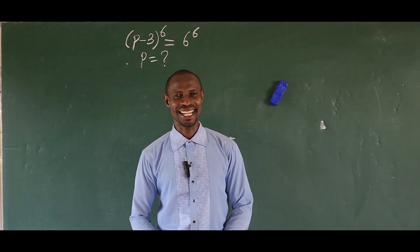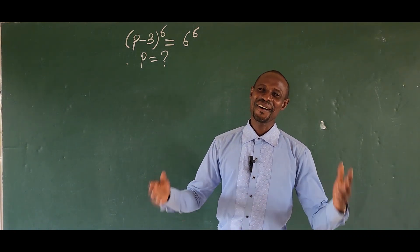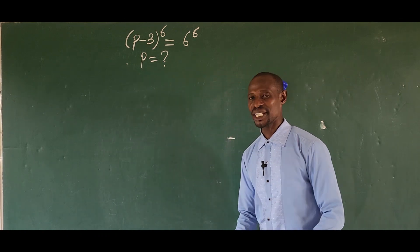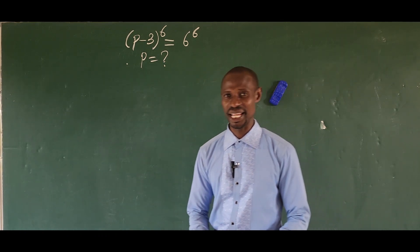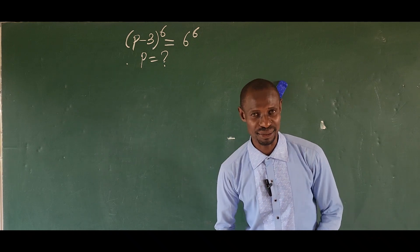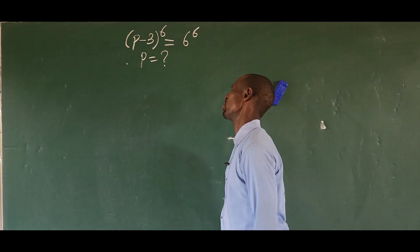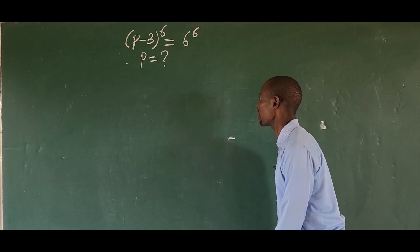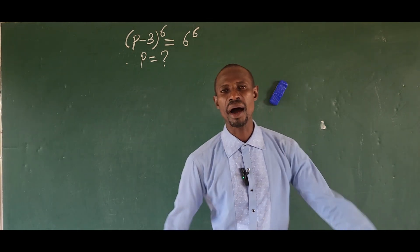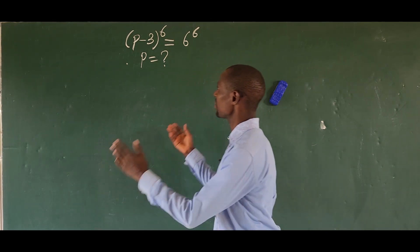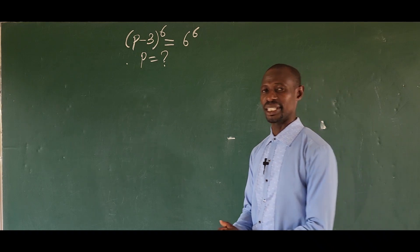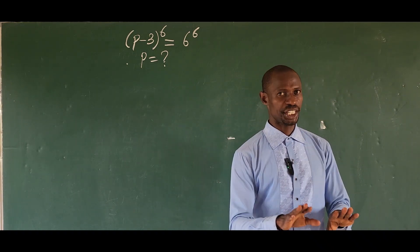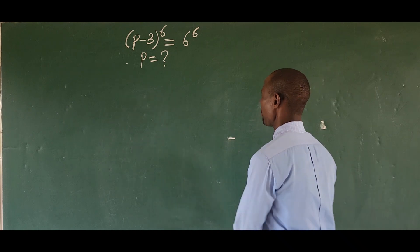Hello, welcome to today's math class. What is the value of p that will satisfy this equation? We have to solve for six roots — both the imaginary and the real roots. The question is: bracket open p minus three close bracket, all raised to the power of six, equal to six to the power of six. This is solvable if you have a sound knowledge of algebra.